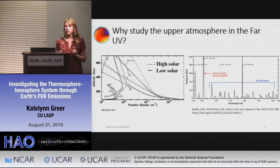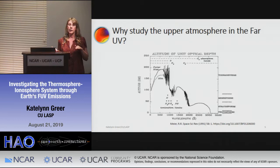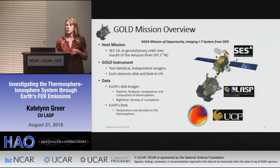The ionosphere above about 200 kilometers is dominated by O+. Another great reason to look at the atmosphere from above in the far ultraviolet is that the atmosphere below provides an opaque background — you don't get light coming up from below, giving you a nice dark background to observe the thermosphere and ionosphere.